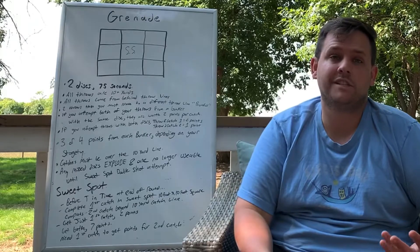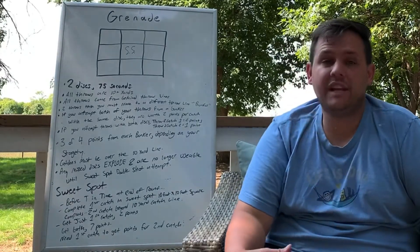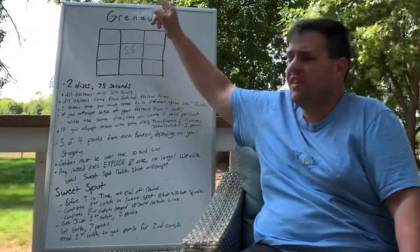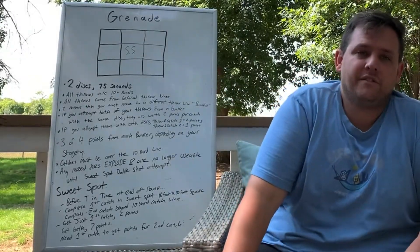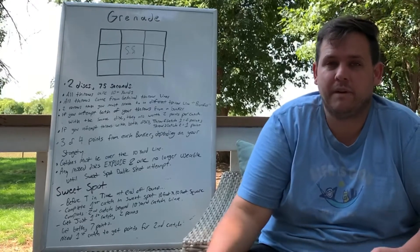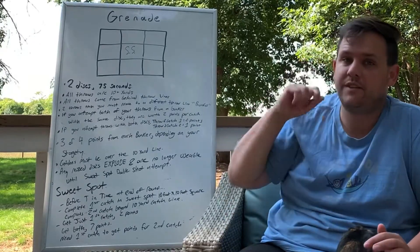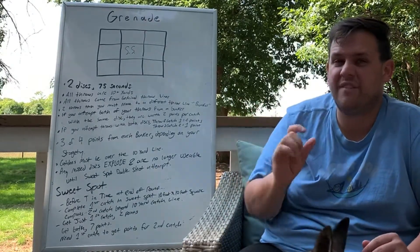If you leave it really close, it's going to be the judge's call. You need to catch the first catch in the sweet spot to get the extra points for the longer throw for the sweet spot double shot. If you get one catch in the sweet spot, that's two points. If you get both though, it's worth seven points.